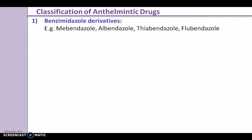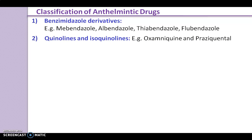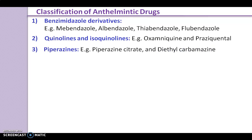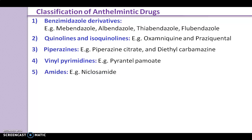The first class is benzimidazole derivatives. Examples are mebendazole, albendazole, thiabendazole, and flubendazole. The next class is quinolines and isoquinolines. Examples are oxamniquine and praziquantel. Next is piperazines. Examples are piperazine citrate and diethylcarbamazine. Next class is vinylpyramidines. Example is pyrantel pamoate. Next one is amides. Example is niclosamide.